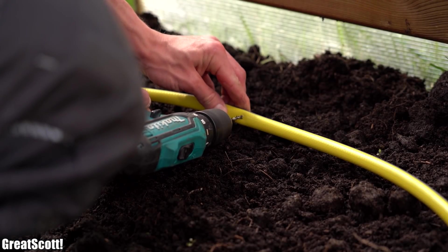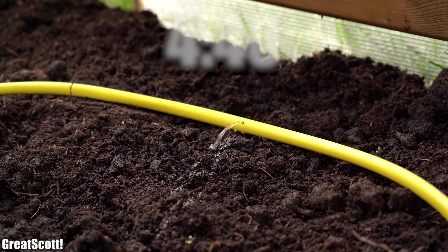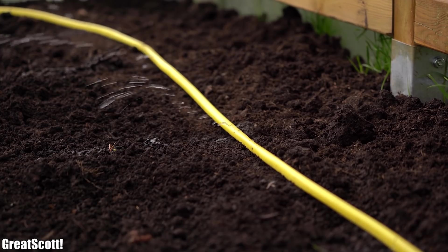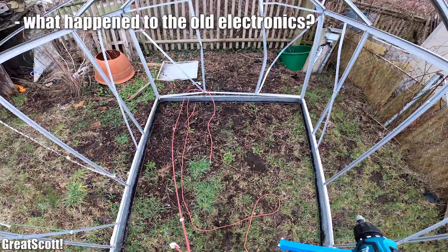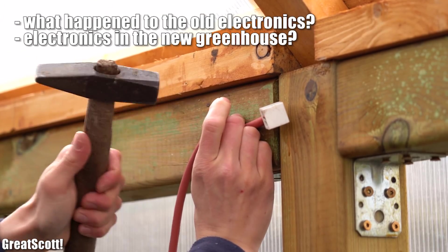Now before getting to the DIY watering system to which you can skip by following this time arc, I have to address the big elephant in the room. What happened to the electronics when the old greenhouse got destroyed and in which way did I install them in the new greenhouse?